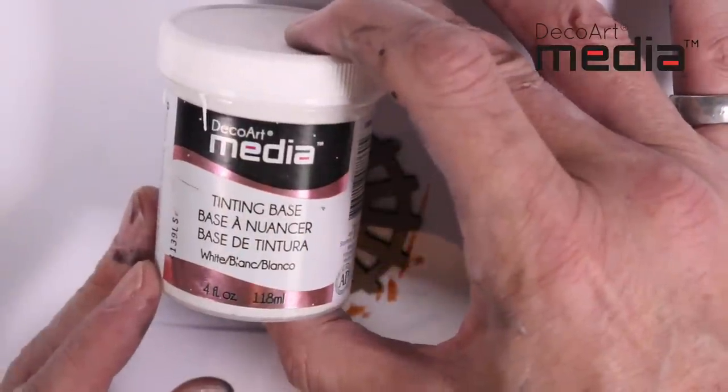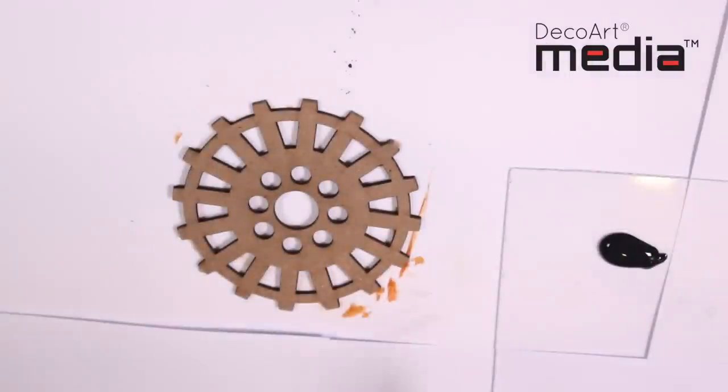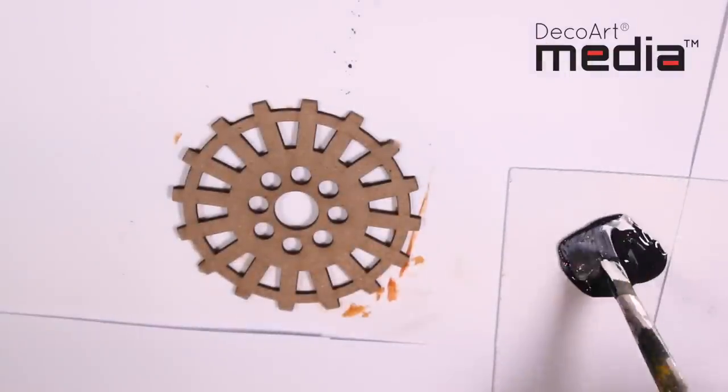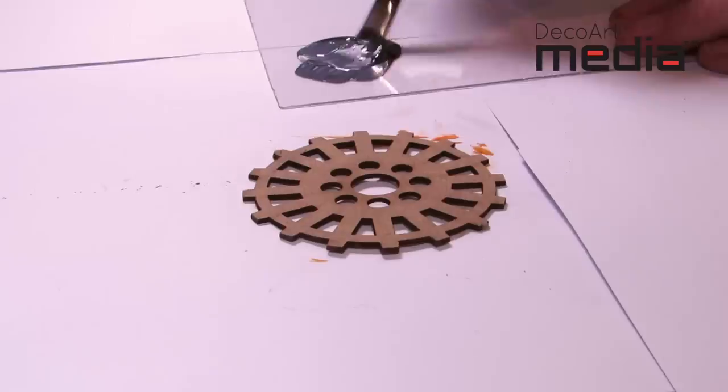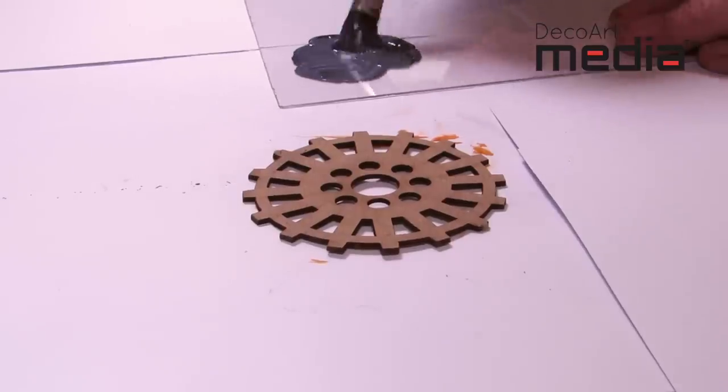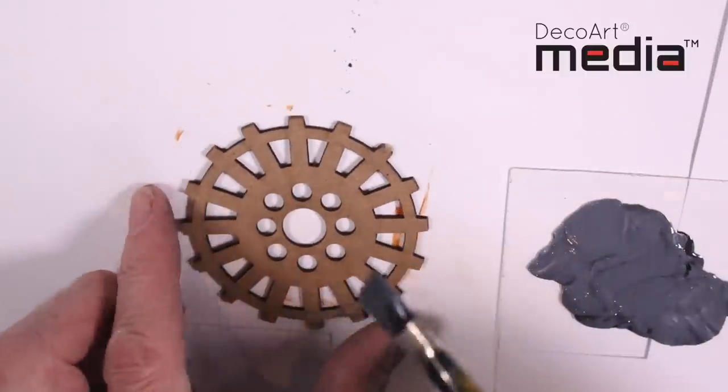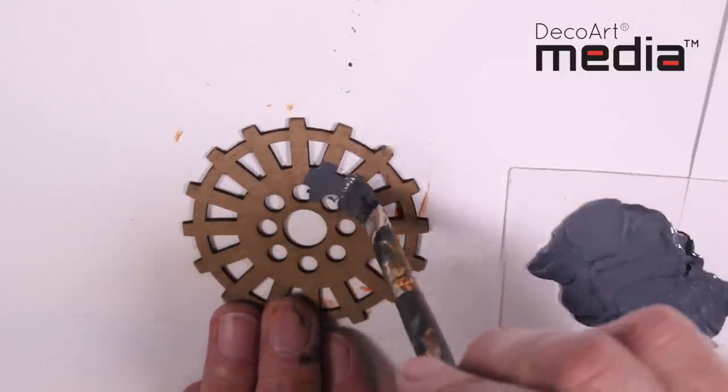I'm now going to mix in some of the media tinting base. This will make the Payne's Grey more opaque but slightly lighter, so I'm looking for a medium grey. Once dry, apply one coat to the substrate.